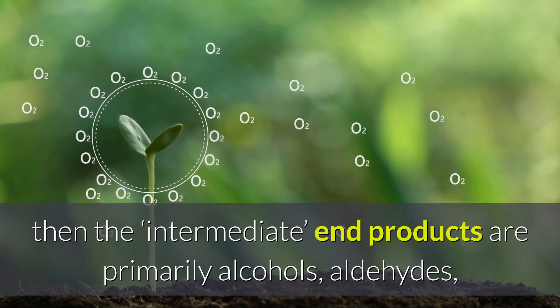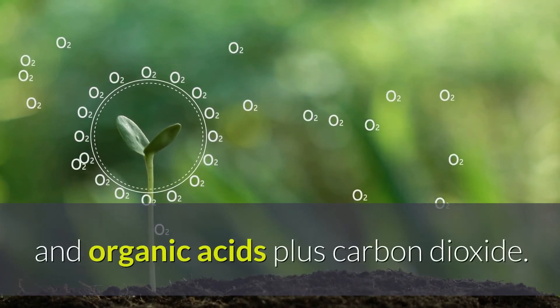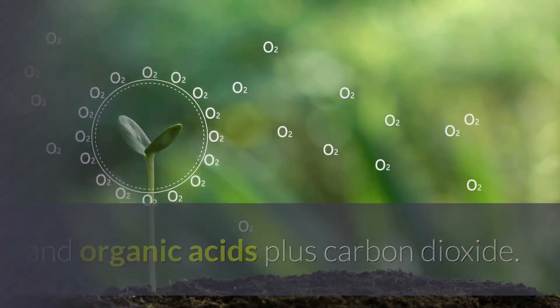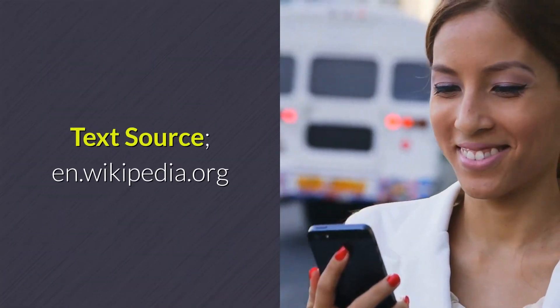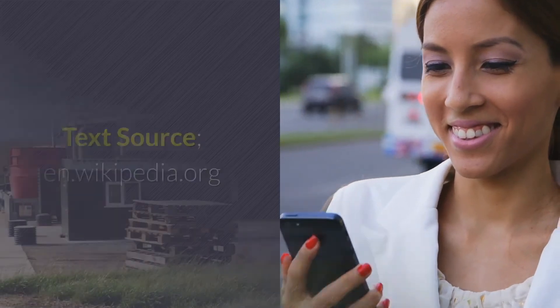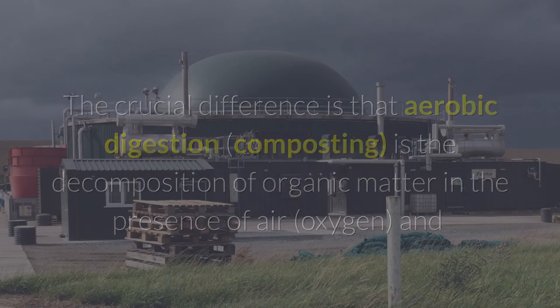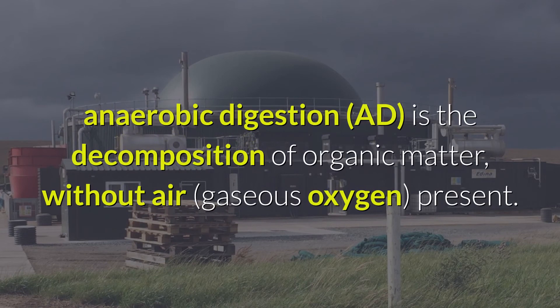When the oxygen source in an anaerobic system is derived from the organic material itself, the intermediate end products are primarily alcohols, aldehydes, and organic acids, plus carbon dioxide. In summary, the crucial difference is that aerobic digestion (composting) is the decomposition of organic matter in the presence of air and oxygen, while anaerobic digestion (AD) is the decomposition of organic matter without gaseous oxygen present.